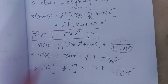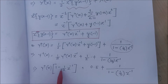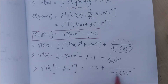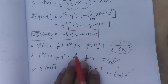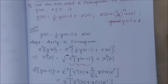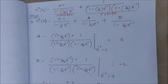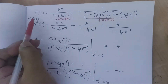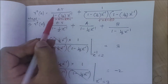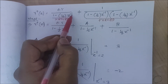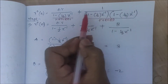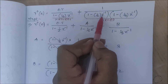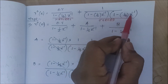Now we take Y terms to the left-hand side and X terms to the right-hand side. It becomes Y(z)·(1 - (1/2)z^(-1)) = 0.5 + 1/(1 - (1/3)z^(-1)). Therefore, Y(z) = 0.5/(1 - (1/2)z^(-1)) + 1/[(1 - (1/2)z^(-1))(1 - (1/3)z^(-1))].